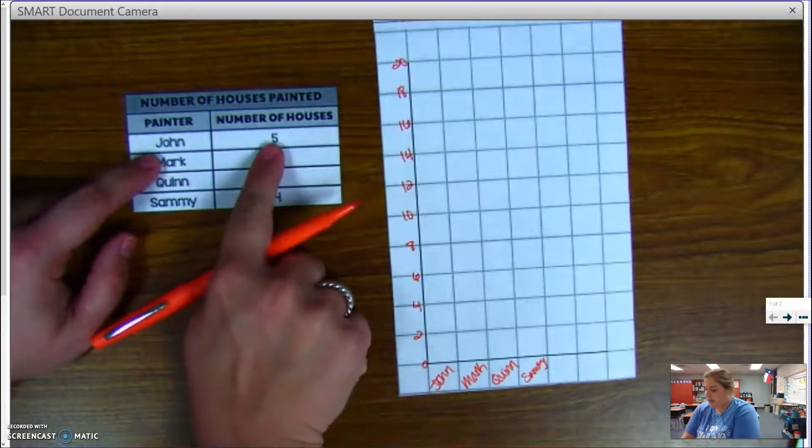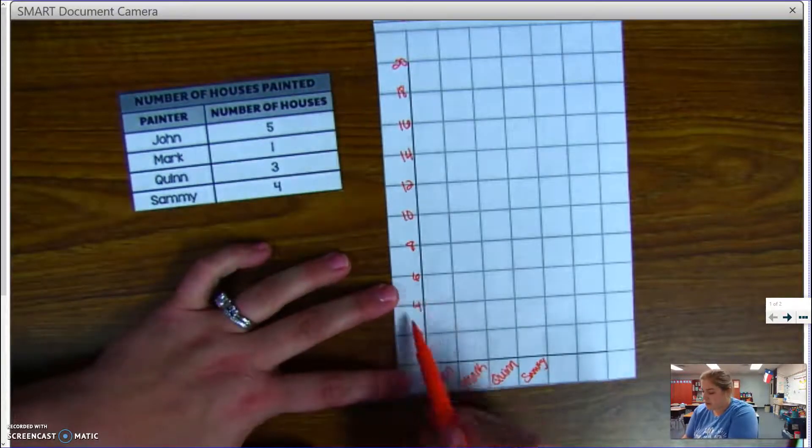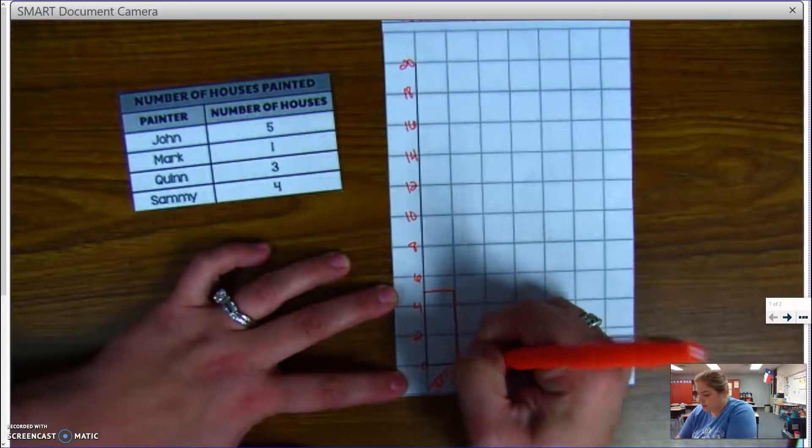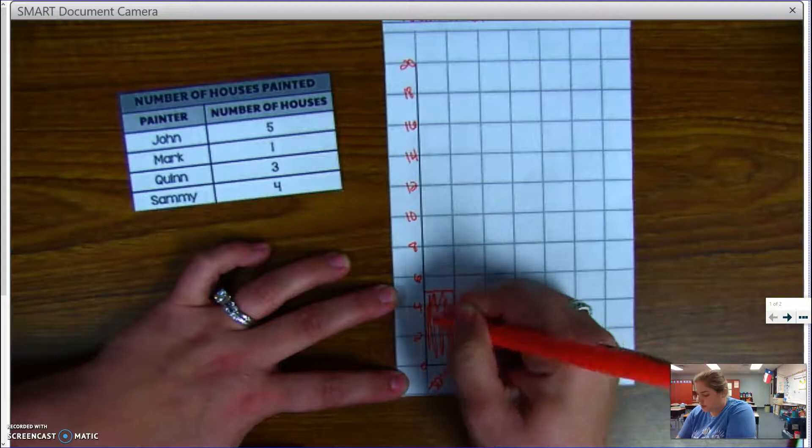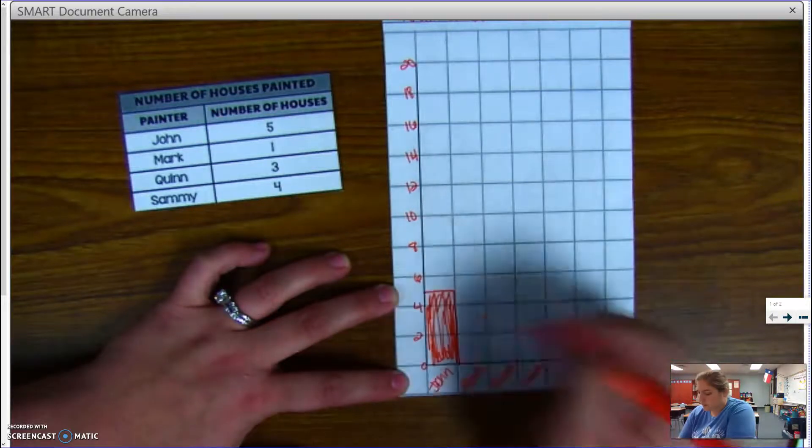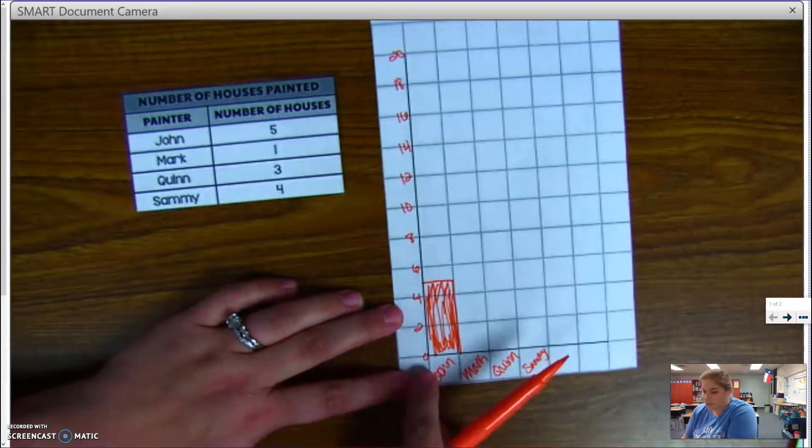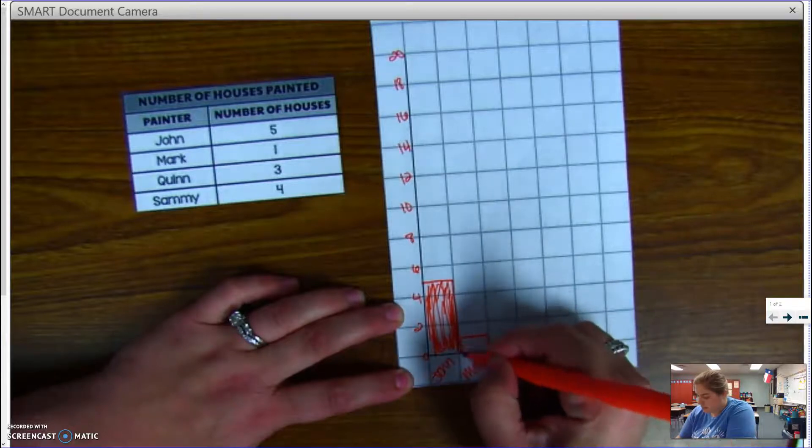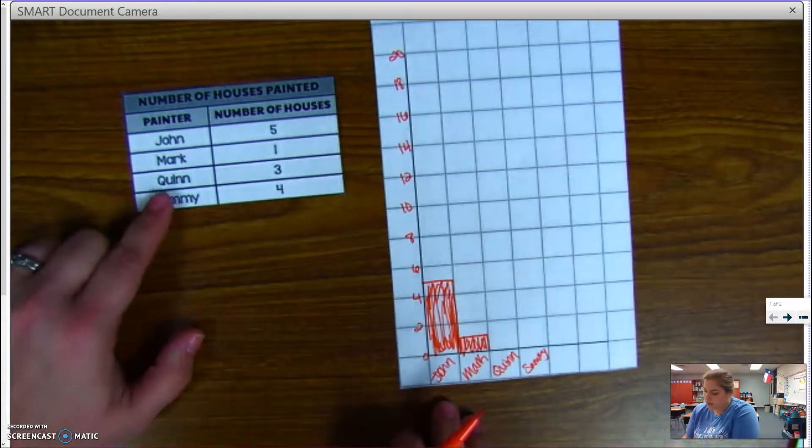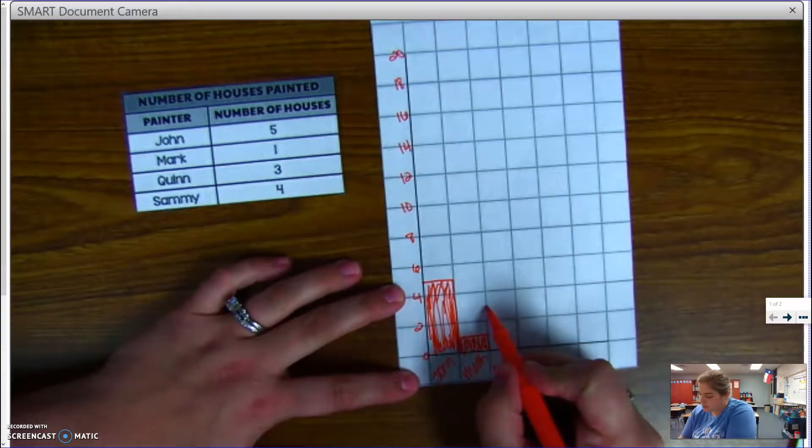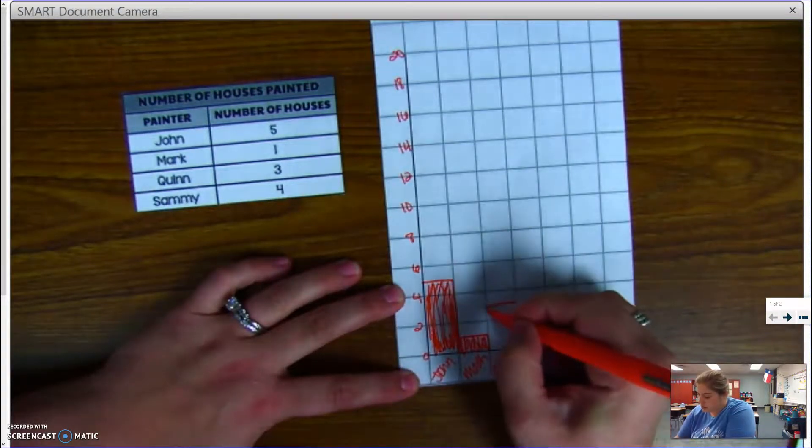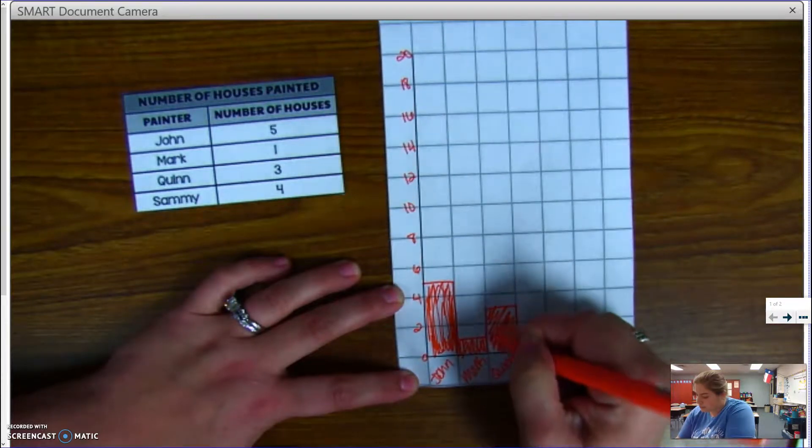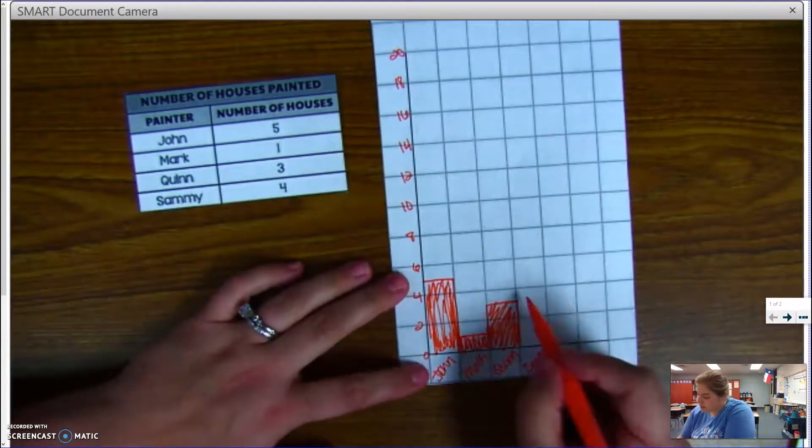So John painted five houses, 5 is in the middle between 4 and 6, so I'm going to go right in the middle here and color in John's bar. Okay, Mark did 1, which is right in the middle between 0 and 2. Quinn did 3, again in the middle between 2 and 4, and then Sammy painted four houses here.